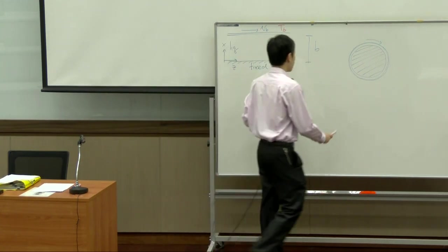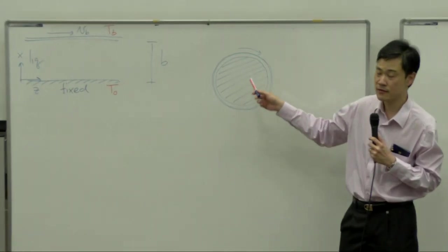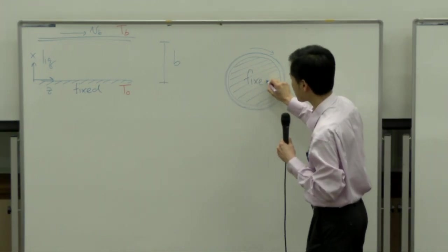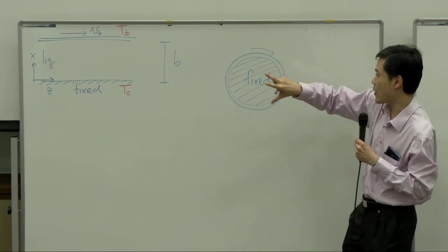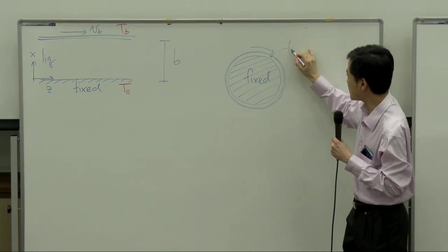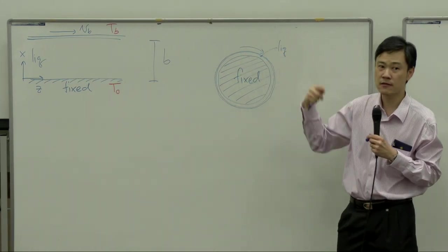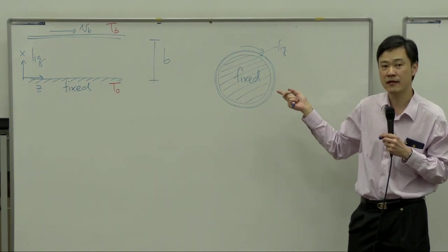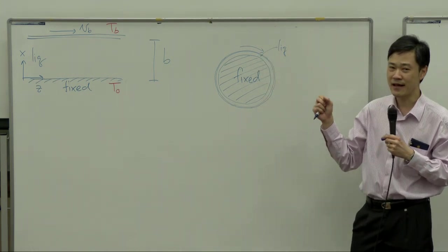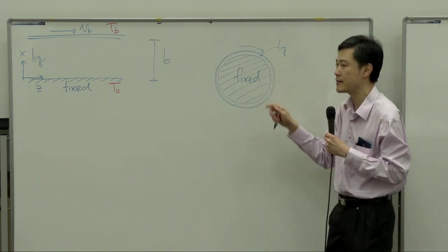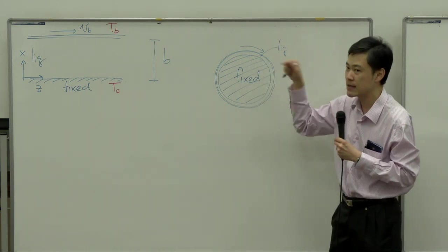Today I will give you examples with detailed calculation regarding real convection. The example is a bearing — a liquid bearing. We have a fixed cylindrical rod, and outside you have a sleeve that covers this rod. Within the gap there is liquid, possibly oil, and the outside sleeve is moving and rotating. This is called a liquid bearing, used to reduce friction, just like a ball bearing but with liquid inside.